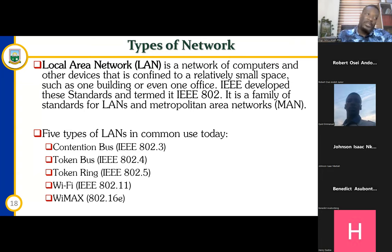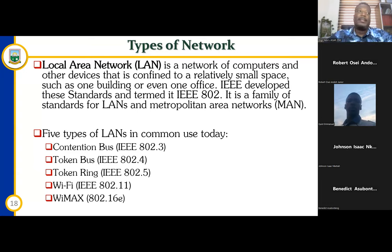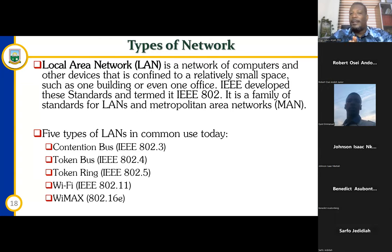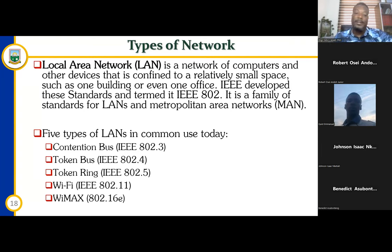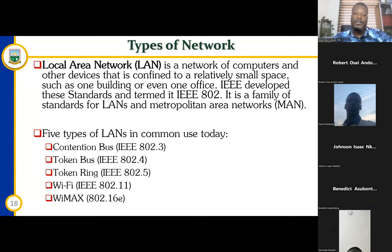So if I have ten computers in my office and I want to connect all of these computers together, the first thing I'll ask myself is: what type of topology am I going to incorporate? The best topology we normally use is the star topology. Once I have this topology in mind, per infrastructure, I would connect all these cables to maybe a router, an access point, or a switch. Once all cables connect to the switch and get connected to the individual computers, we can term that a local area network.